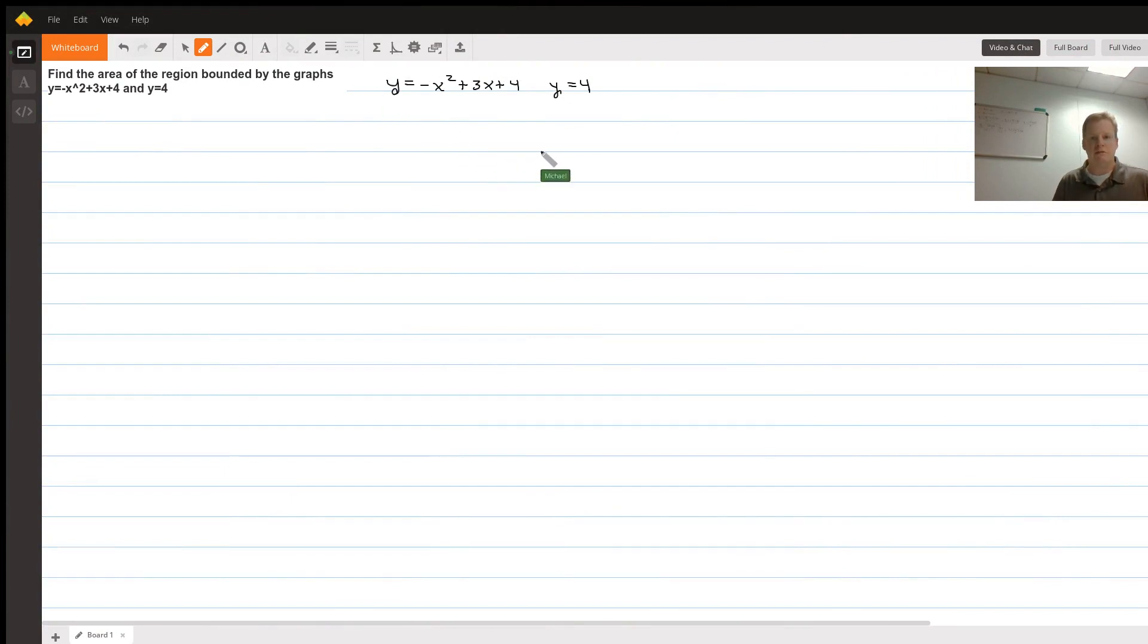Hi Matthew, in order to find the area between the curves I am going to have to determine which one's on top and which one's on the bottom. Because this is a quadratic facing down, it's facing down because it's a negative x squared term.